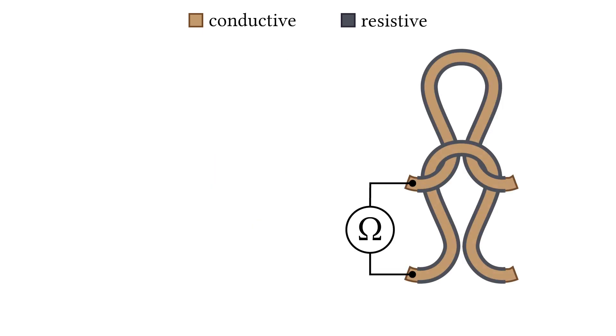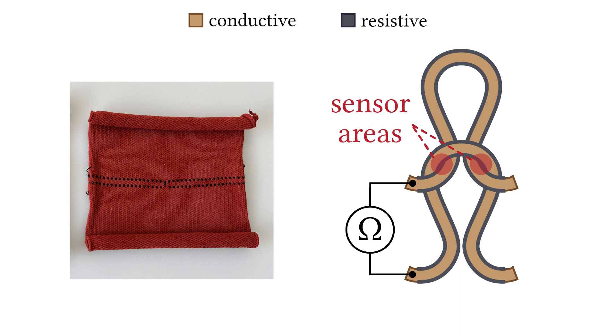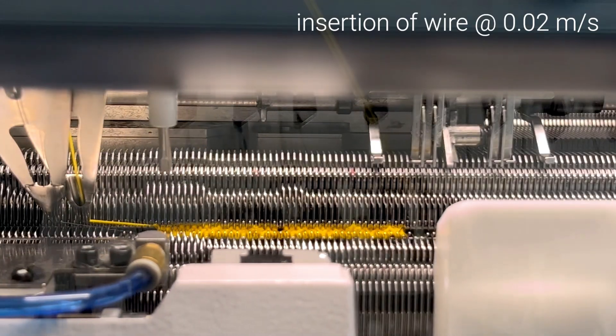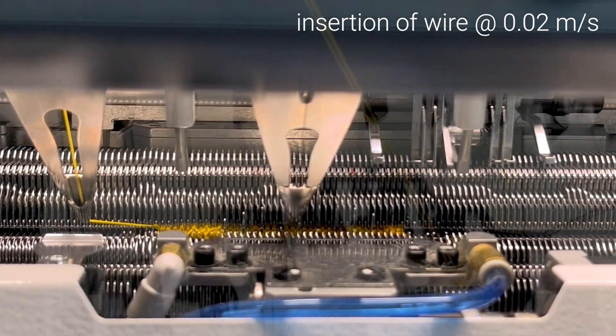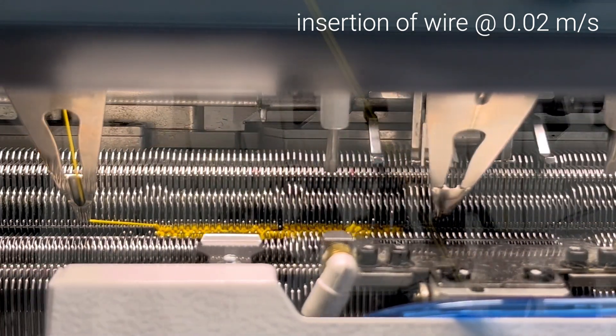We create loops of coated wire that provide these intersections at the intermeshing points between loop head and feet. To do this, we use flatbed knitting, since it is highly adaptable and provides loop-level control during design and programming processes.